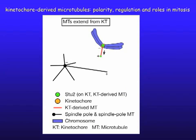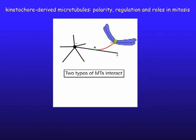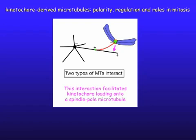Our findings are summarized here. As shown by the red line, microtubules extend from the kinetochore with the distal plus end. As shown by a green dot on the orange dot, STU2 — an ortholog of XMAP215 and ch-TOG — localizes at the kinetochore. STU2 plays a central role in microtubule generation at the kinetochore. A kinetochore-derived microtubule often interacts with a microtubule from a spindle pole along their lengths, and our data suggests that this interaction facilitates kinetochore loading onto the spindle pole microtubule.